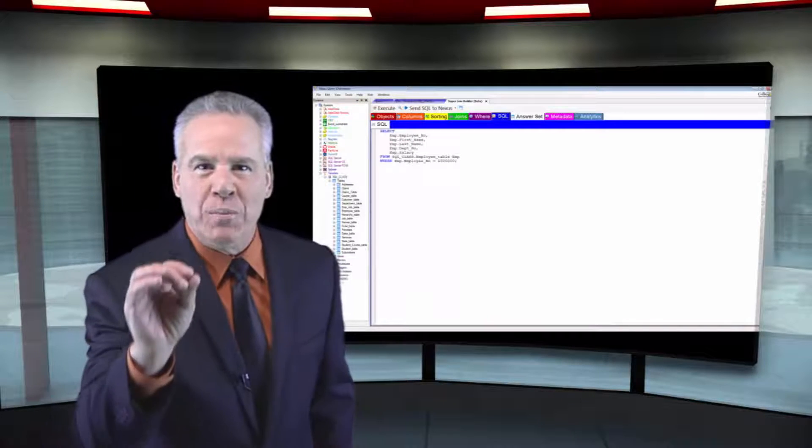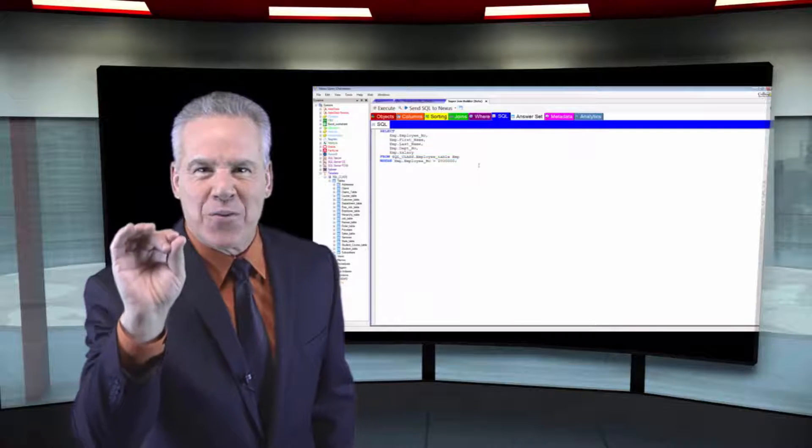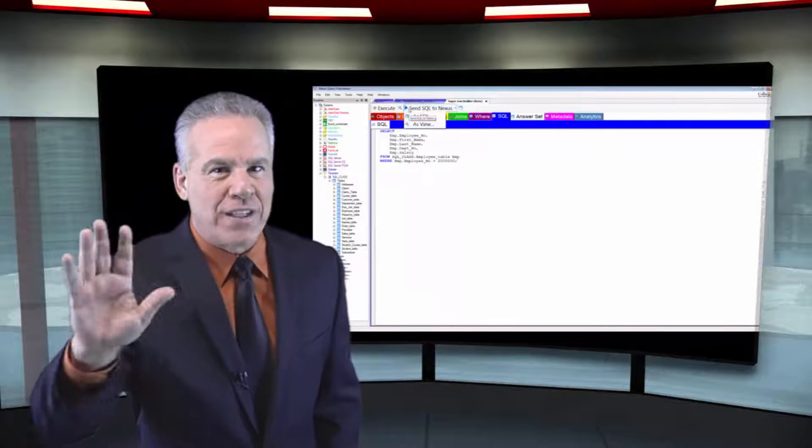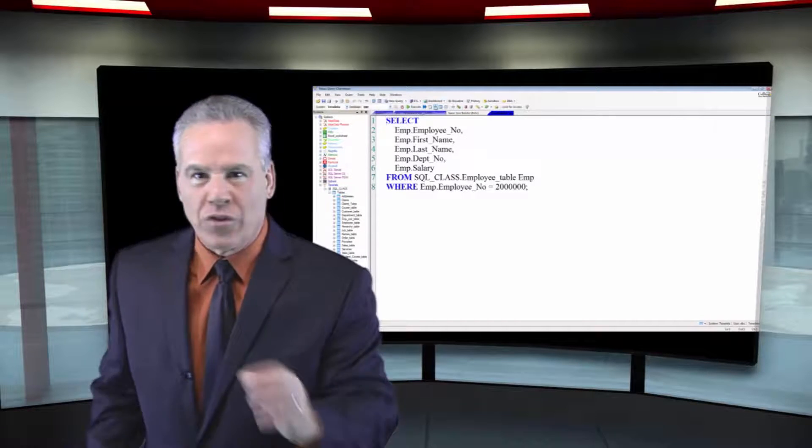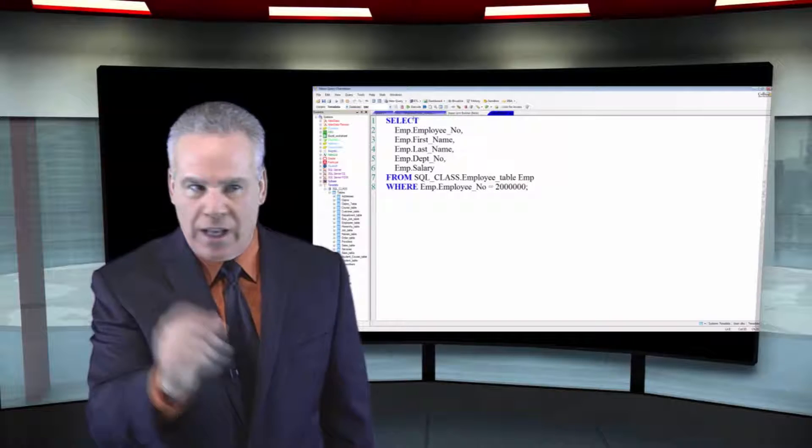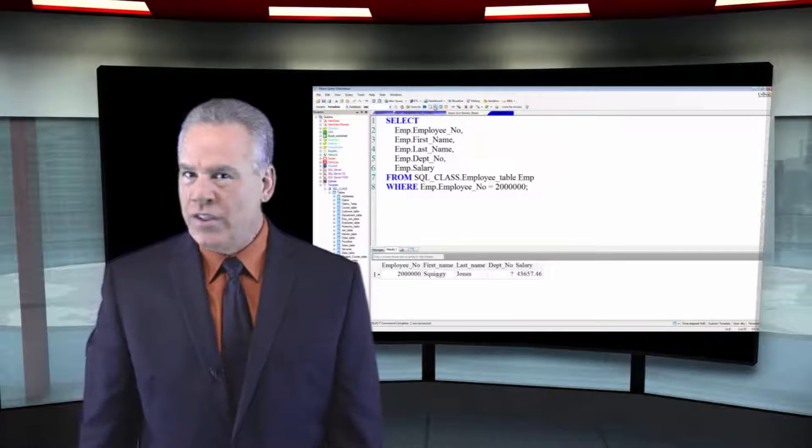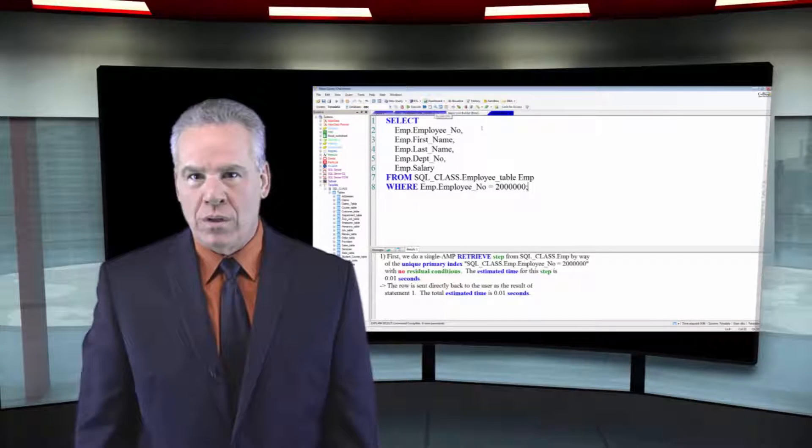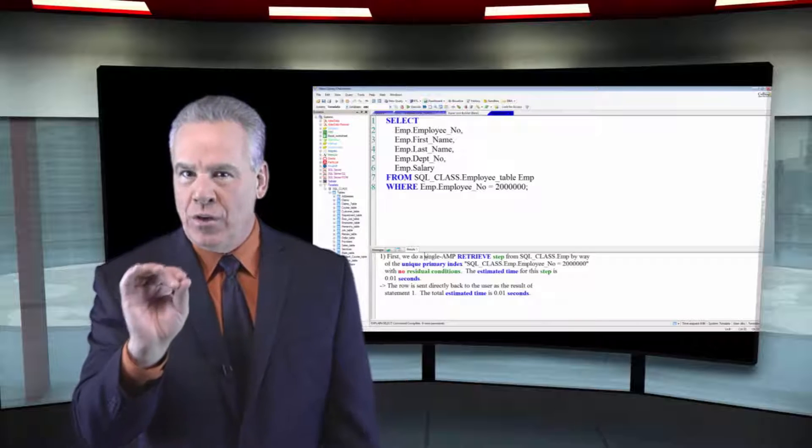it's always going to be a one-second retrieve every time, and only one amp will be called. So get that in your head right now. If you use the primary index column in your WHERE clause, one second, one row, single amp retrieve.